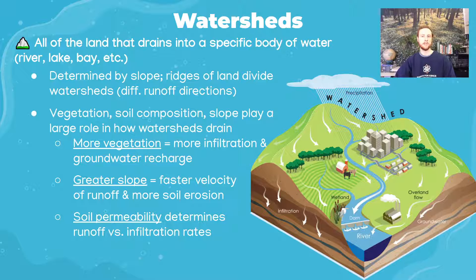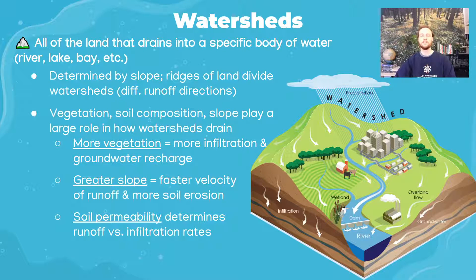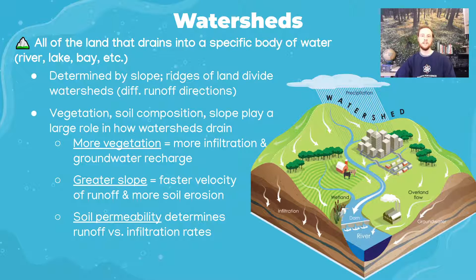The greater the slope, the faster the velocity of the runoff, and it has more inertia — more steam, you could say — to pick up soil, debris, and sediments on the ground and carry them into the body of water. Then we have soil permeability: how permeable the soil is impacts whether water is running off or infiltrating and recharging groundwater.